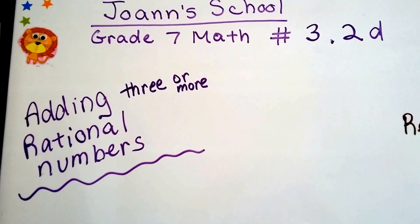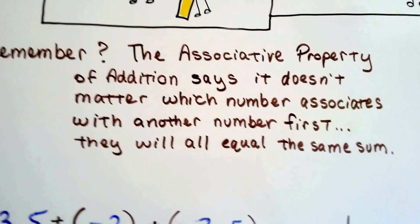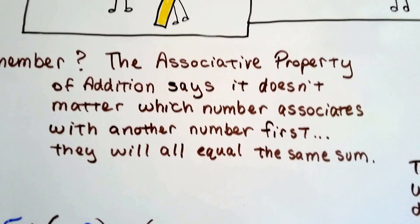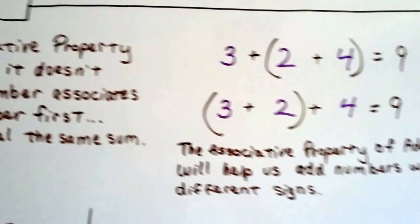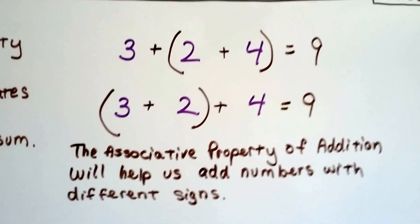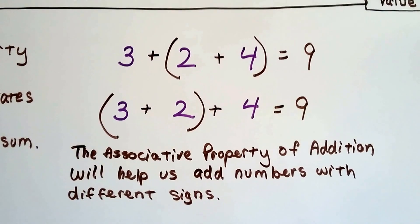Grade 7 math, number 3.2d, adding three or more rational numbers. Do you remember the associative property of addition says it doesn't matter which number associates with another number first, they'll all equal the same sum at the end? Well, when we have 3 plus 2 plus 4, and the 2 and the 4 are grouped together as a 6, and we add the 3, it equals 9.